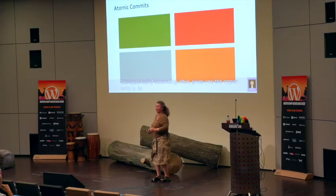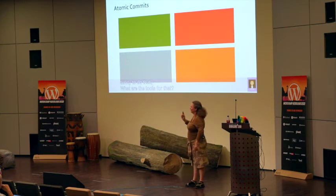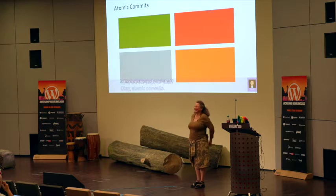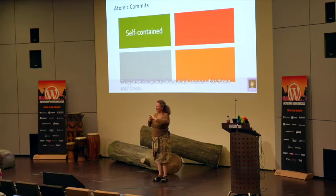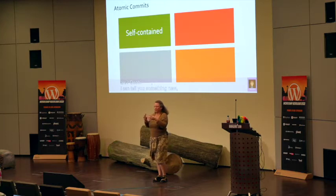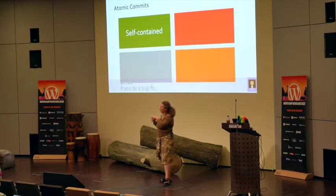I forgot I had a slide about atomic commits. Atomic commits — does anyone know what those are? Atomic commits are basically a unit which is completely self-contained. If you make a bug fix and that bug fix ought to have a test, then that test is contained within the same commit. Everything that's needed for the commit to be complete is in that one commit.